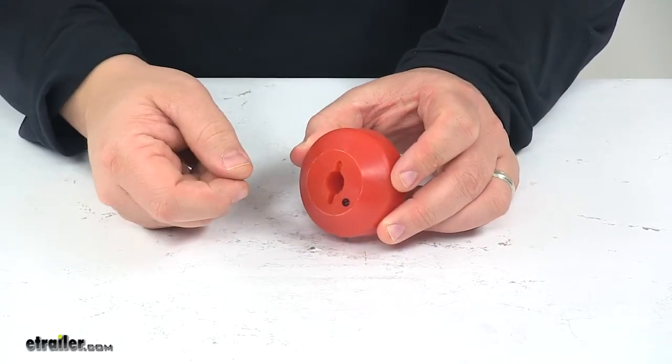You just feed your rope through the hole in the center here and then attach your hook back to your rope.